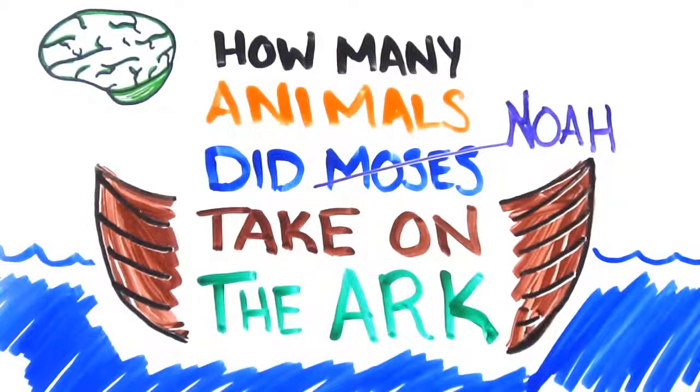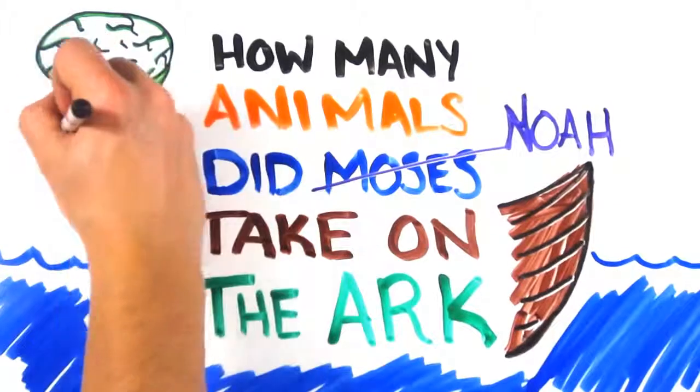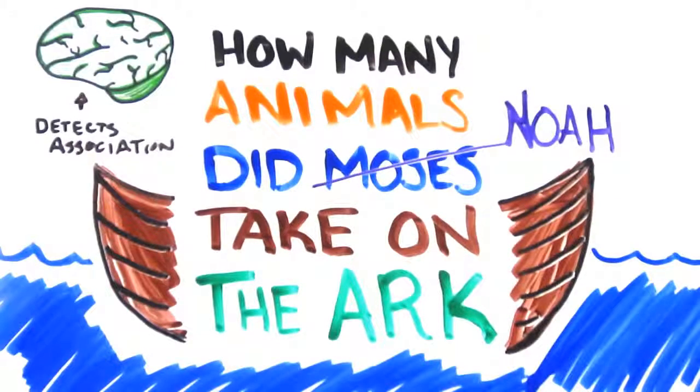Again, our brain invests as little resources as necessary so that things run quickly and smoothly. Because Moses is not abnormal in the biblical context, System 1 unconsciously detects an association between Moses and Ark and quickly accepts the question.